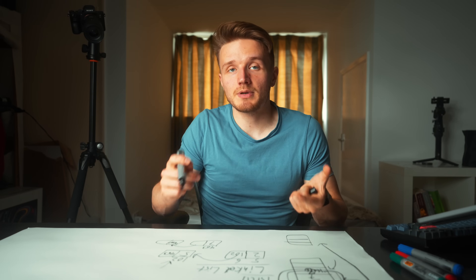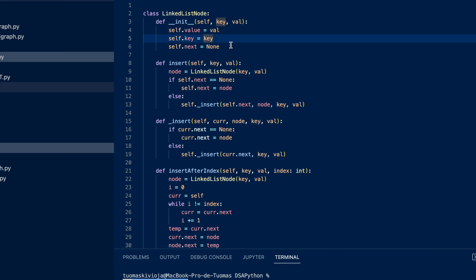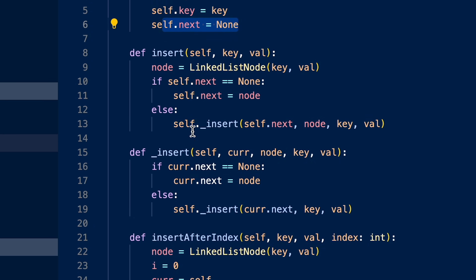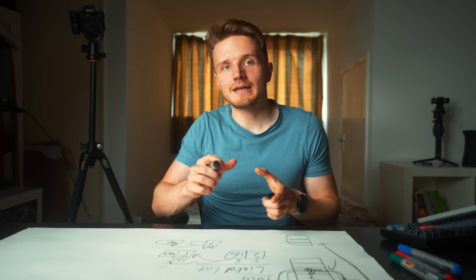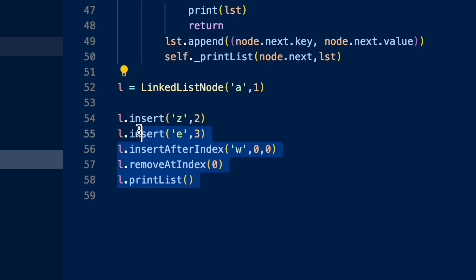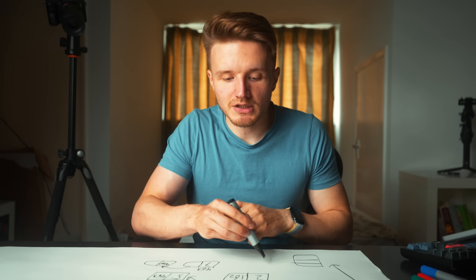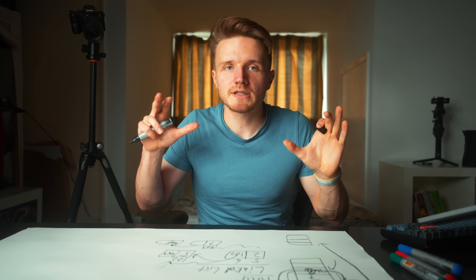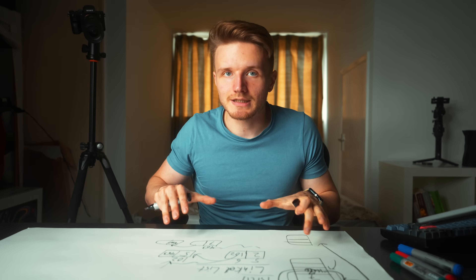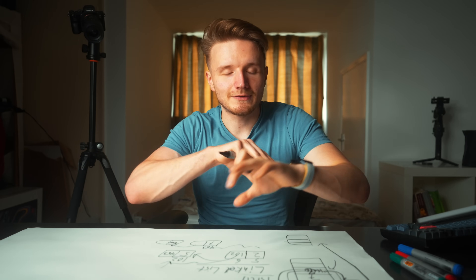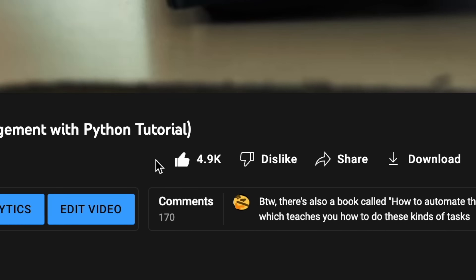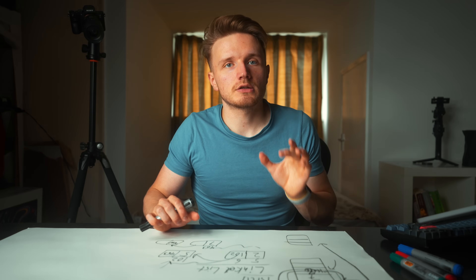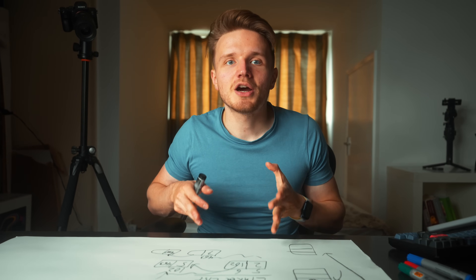The way a linked list would be implemented in an actual programming language like Python is that you would create a class called LinkedList, then create methods inside that do all of this magic. There would be a client where all they have to do is call the append method, and it would simply do all the magic behind the scenes. That is really the beauty of data structures. The point of this video is not so you can understand all the details — it's just to give you an idea of why different data structures even exist.